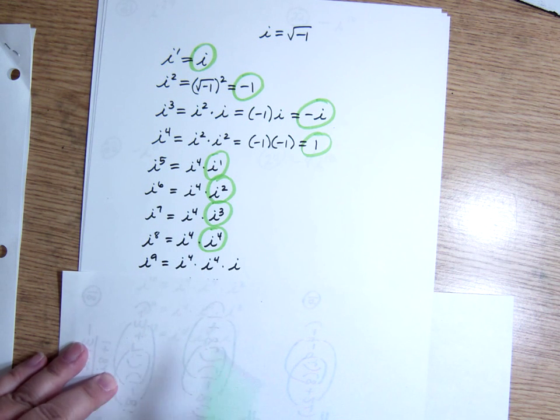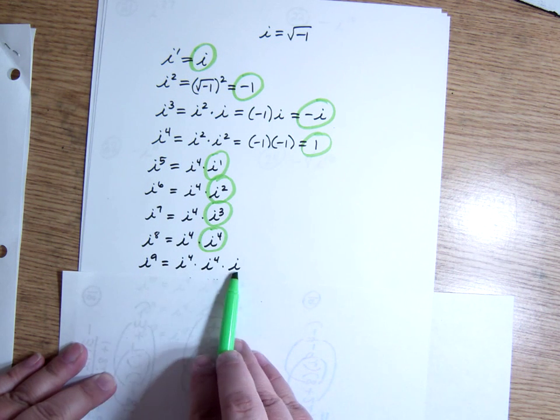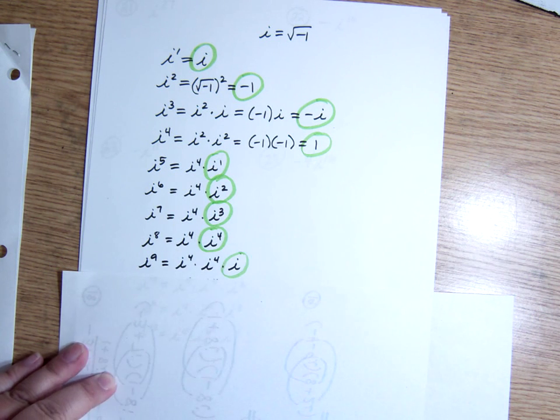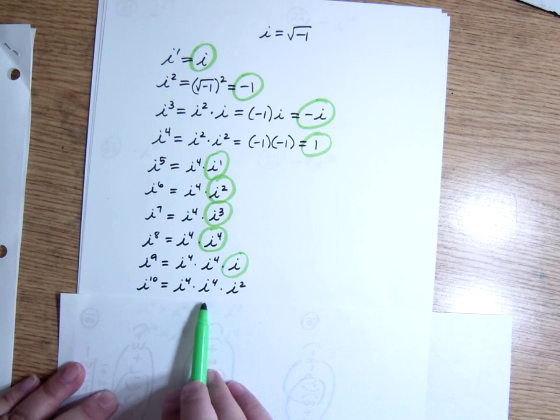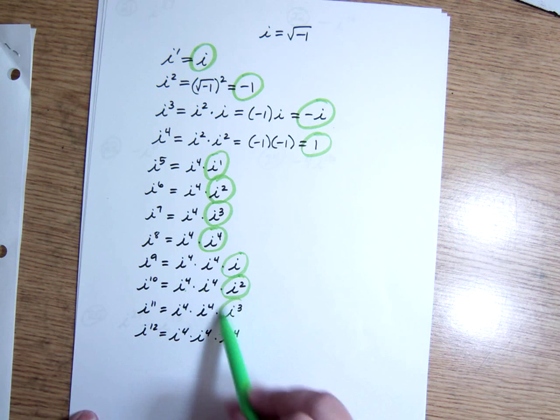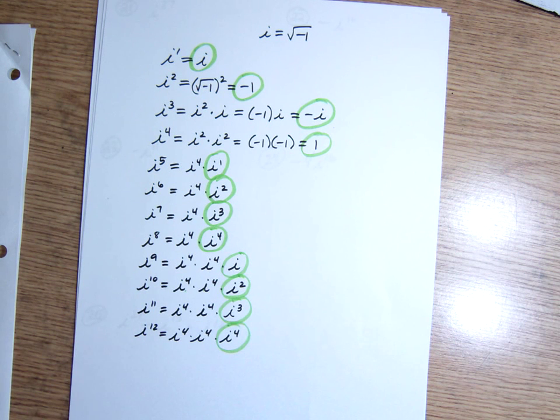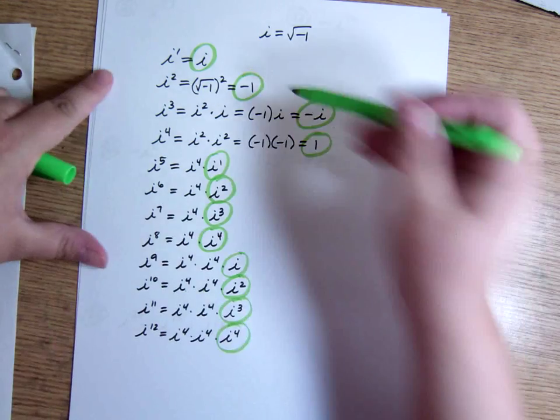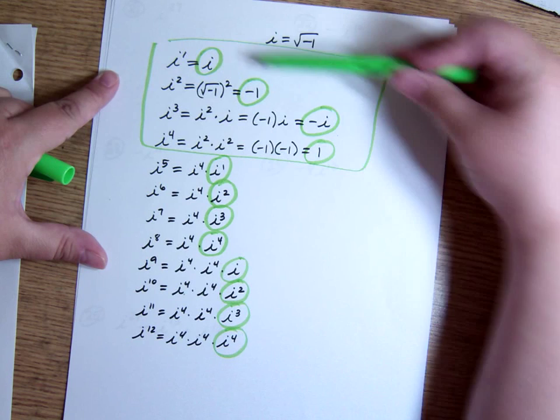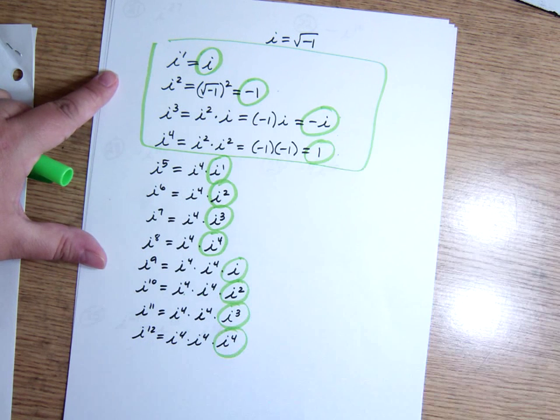i to the ninth is 2 i to the fourths and 1 more i. So basically, it just starts looping. We're in an endless loop of everything i to any power greater than 1 is going to be one of these four answers. It's going to be i, negative 1, negative i, or 1, depending on the remainder when I divide the exponent by 4.